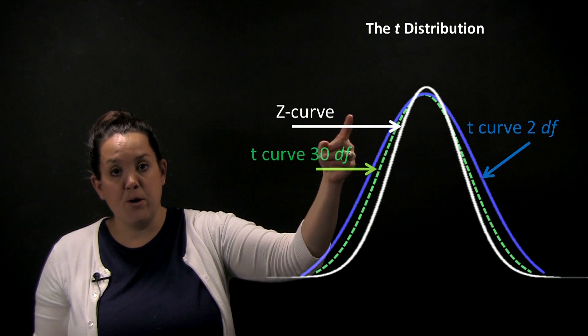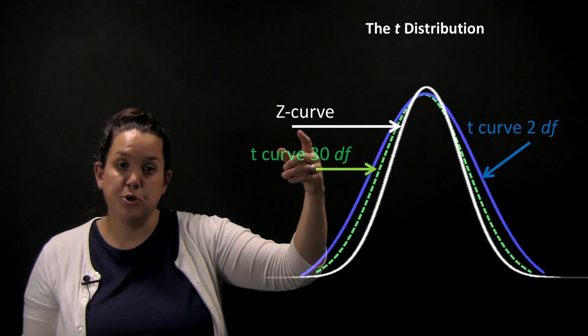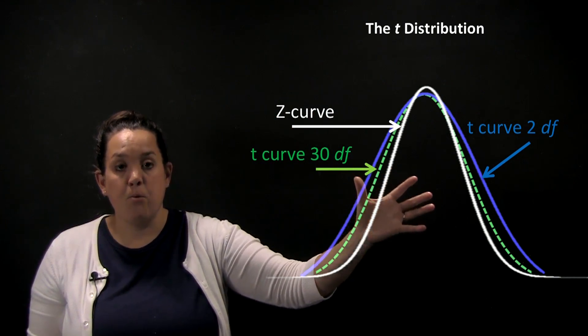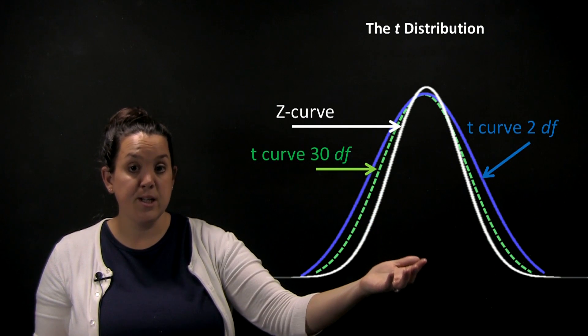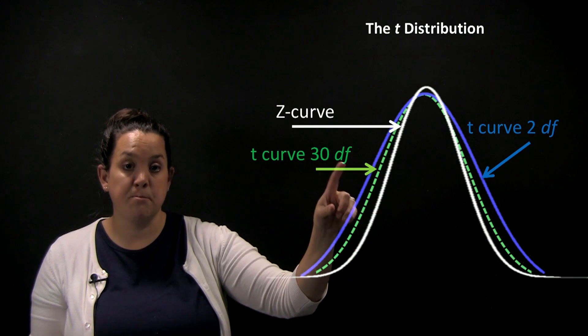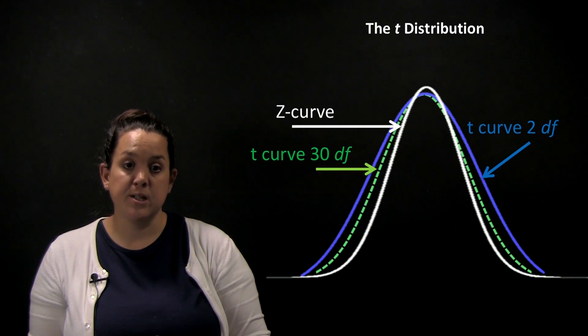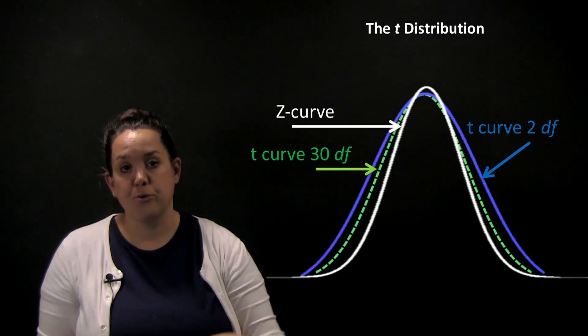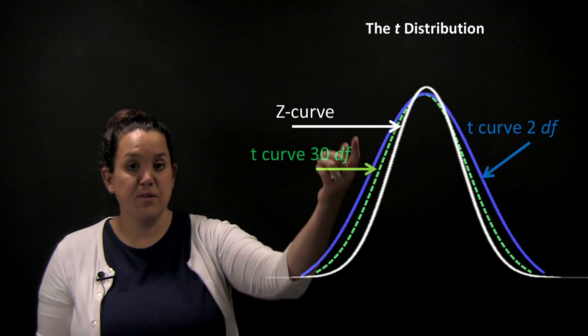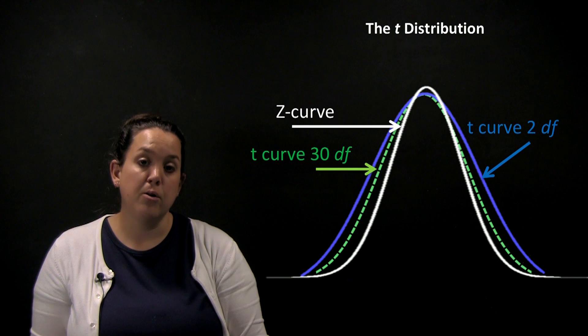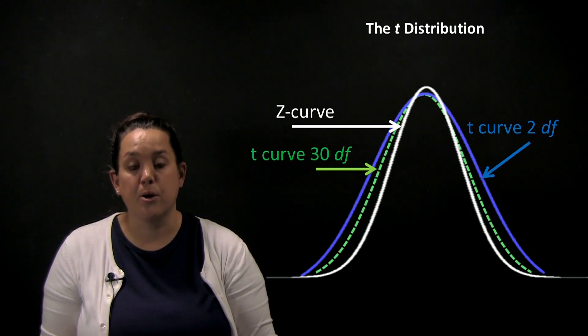The z-curve is what we call the normal distribution or the normal curve, and then we have multiple t-curves. Similarities between these curves: the z-curve is symmetric, bell-shaped, and centered at zero, which is also true for any curve on the t-distribution. Some differences, though, is that there's actually only one z-curve, but there's an infinite number of t-curves.